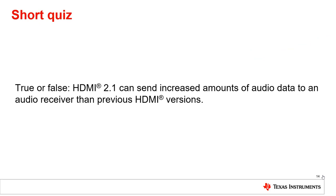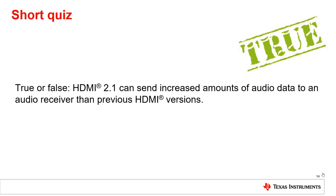True or false: HDMI 2.1 can send increased amounts of audio data to an audio receiver than previous HDMI versions. True. Due to the increase in bandwidth, HDMI 2.1 can send increased amounts of audio data to an audio receiver than previous HDMI versions.